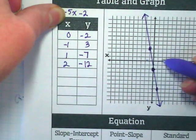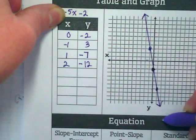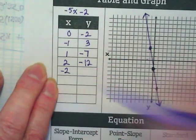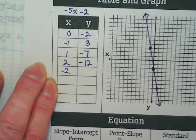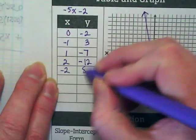Here's positive 2. Negative 12 would be further down, wouldn't it? Let's try negative 2. Negative 5 times negative 2 is going to give me 10 minus 2, which is 8.